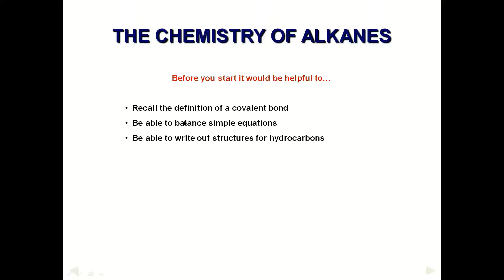Before we move on, it would be a good idea to recall what a covalent bond is. A covalent bond forms because of the sharing of electrons — when atoms come together, they share electrons and form a covalent bond. You should be able to balance simple chemical equations and write the structure of simple hydrocarbons — methane, ethane, at least the first six alkanes.